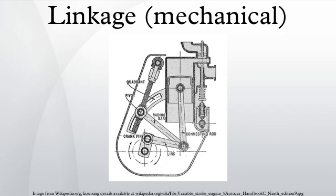The connections between links are modeled as providing ideal movement, pure rotation or sliding for example, and are called joints.